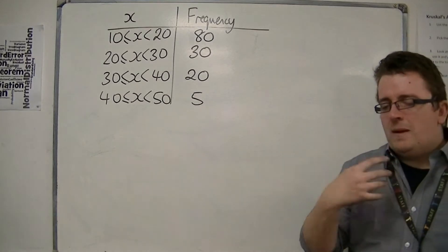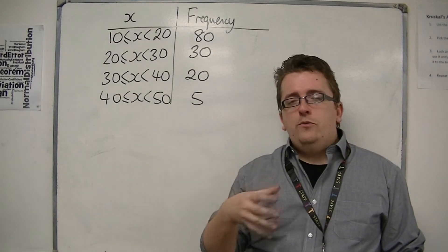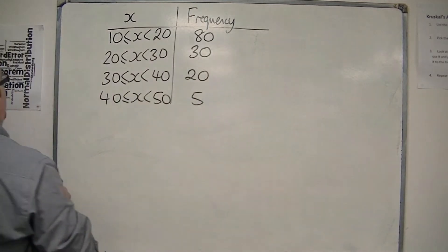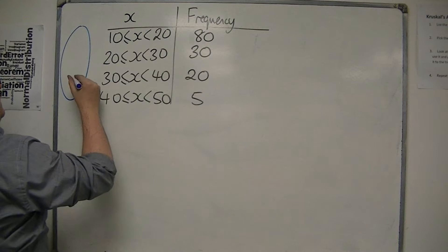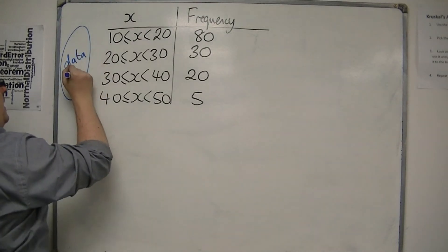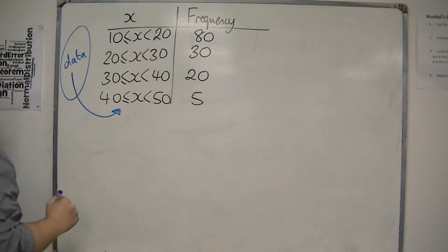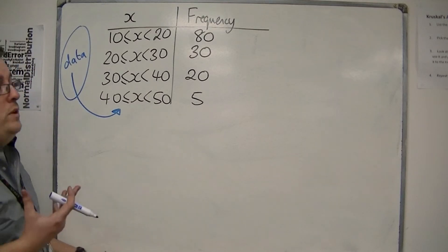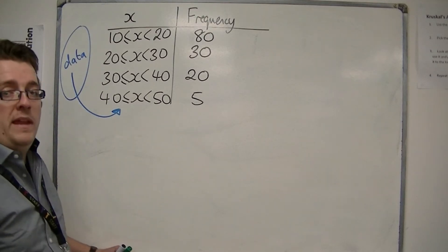Now, what that means is that we don't have the original data. So there was, at some point, some original data which we then put into these groups, but we don't know what those original numbers were. So in this process, we've lost some information, and now we might want to be able to work out the mean, but because we don't have the original data, the mean that we find will only ever be an estimate.